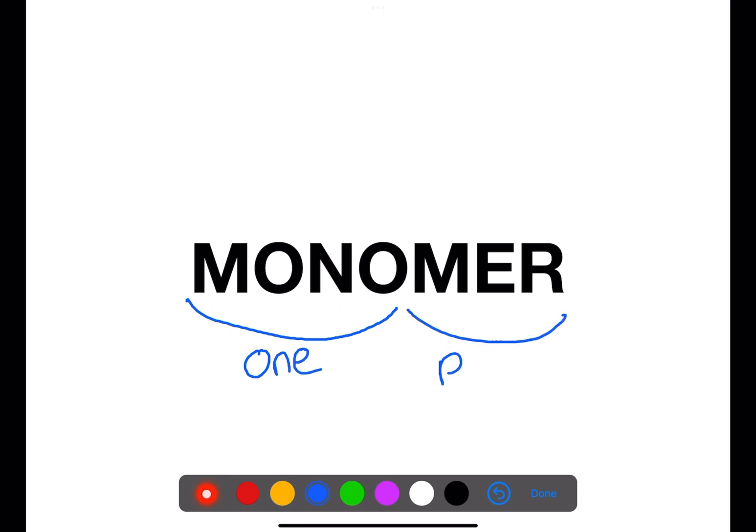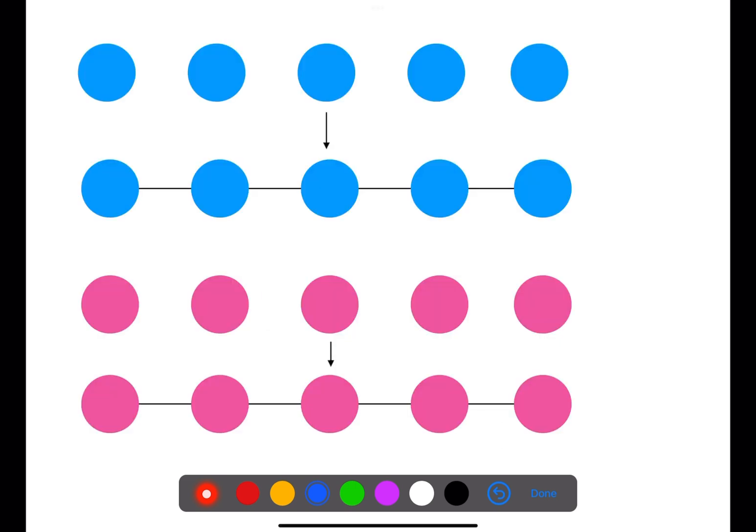Monomers are often unsaturated compounds such as alkenes. These join together through a process called addition polymerization to make polymers.